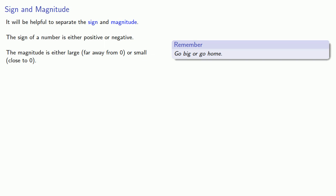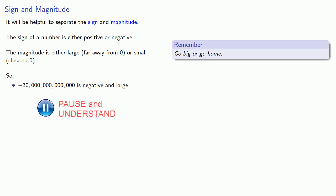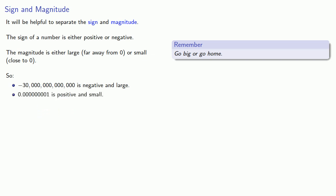For example, a number like negative 30 trillion is negative and large. Meanwhile, a number like 0.0000001 is positive and small. And a number like 15 — well, this isn't really worth talking about when we're dealing with end behavior.